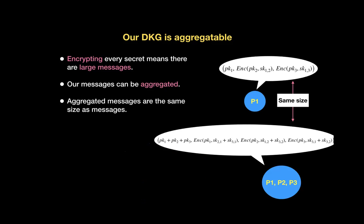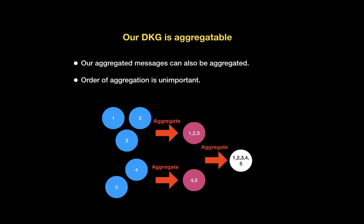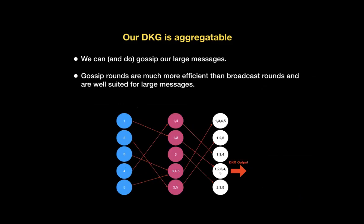Encrypting every secret means large messages, but our aggregated messages are the same size as a single message, so things get increasingly smaller as we spread transcripts over the network. Rather than broadcasting all transcripts at once, we gradually send a transcript, aggregate, send again, and aggregate again. Our aggregation supports this — it is fine to aggregate two, three, four, five, six times, as many times as needed. The order in which you aggregate does not matter; even if a party has already contributed to a transcript, you can still compress without any trouble.